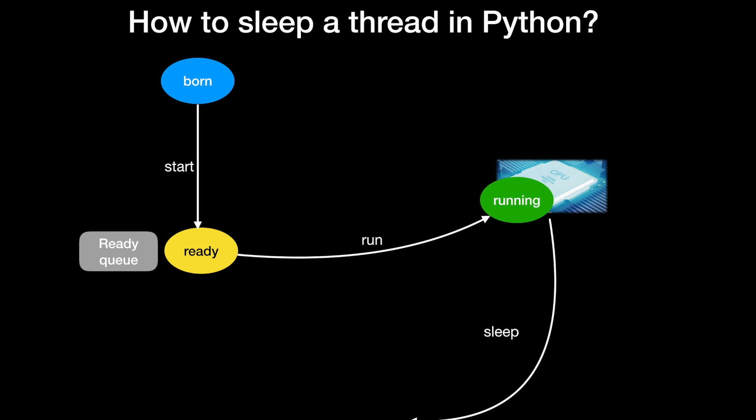Let us say sleep for five seconds. Then for five seconds this thread will be in the sleeping state. Once its sleeping period is over it will wake up and move back to ready state. It doesn't go directly to running state — it goes to ready state first. Then later when the processor is available it will again go back to running state.